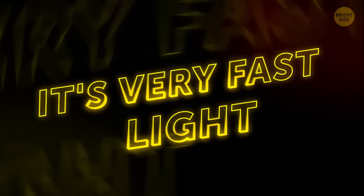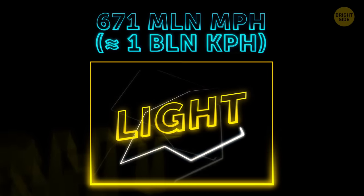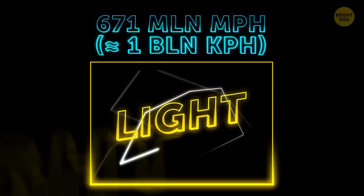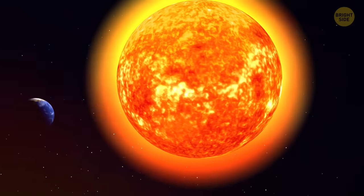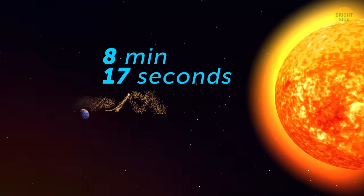It's very fast. It's the speed at which light travels in a perfect vacuum, and it's 671 million miles per hour. It takes sunlight on average 8 minutes and 17 seconds to travel all the way from the Sun to Earth.